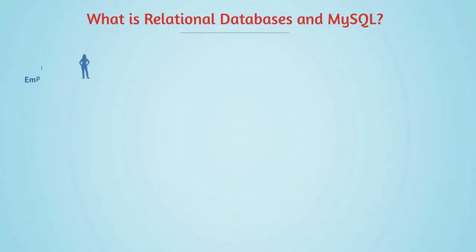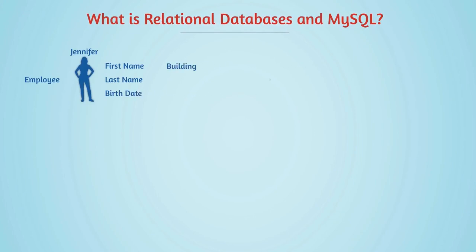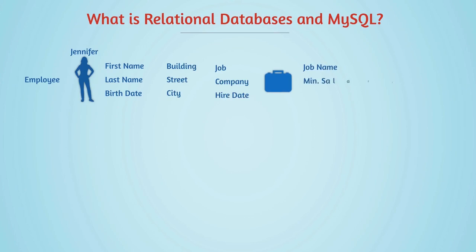Assume we have an employee, Jennifer. Jennifer has a first name, last name, birth date, building number, street, city, a job, a company, hire date. The job itself also has some information: the job name, the minimum salary, the maximum salary, and other elements we can add.